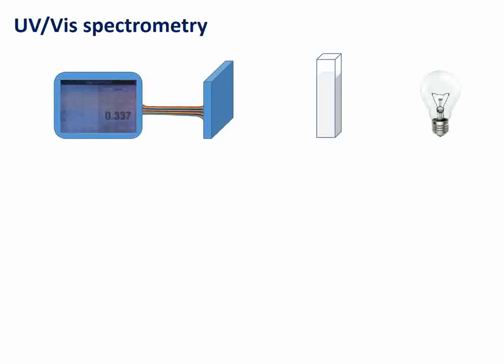There are lots of possible different methods of quantifying a drug in solution, and you'll learn about many of these in your A-level chemistry curriculum. What we're going to look at here is something called UV visible spectrometry.